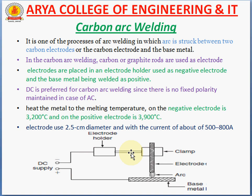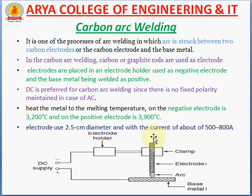The negative electrode is connected directly to the electrode holder and the positive electrode is connected directly to the base metal. DC is preferred for carbon arc welding, as there is no fixed polarity issue as with AC. The temperature at the negative electrode is 3200 degrees Celsius and at the positive electrode is 3900 degrees Celsius. Electrodes generally have a diameter of 2.5 cm and a rated current of about 500 to 800 amperes.